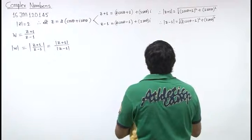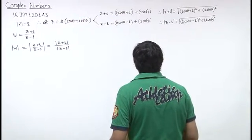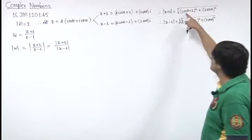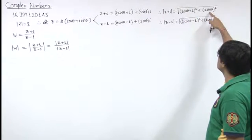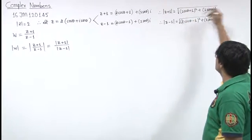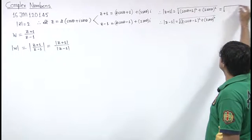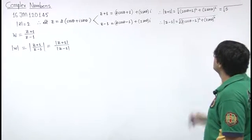Now, we put this value here. So, simplify it. From here we get 4 cos square theta, 4 sin square theta. So, from here we get 4. From here we get 1. So, 4 plus 1, 5 comes.